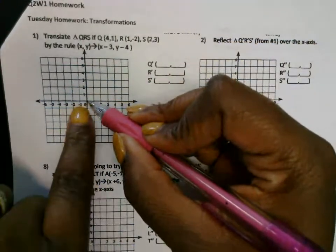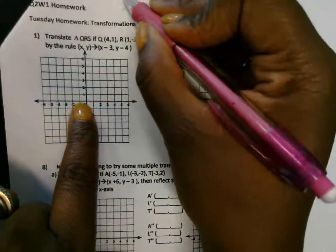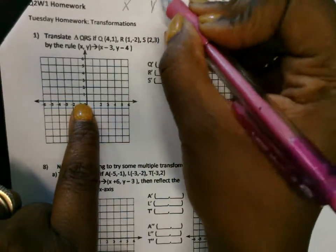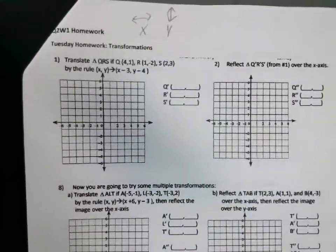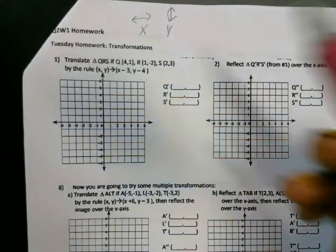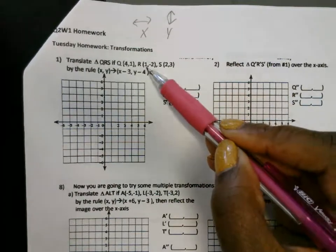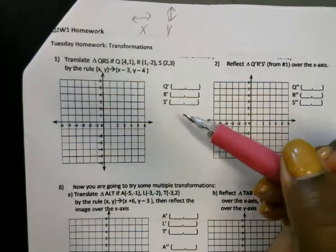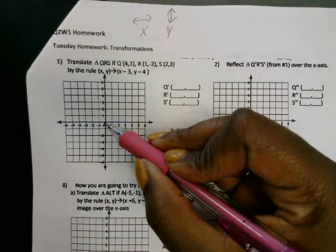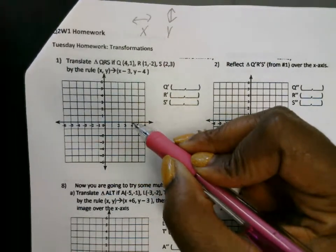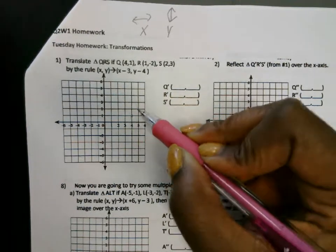Start at the origin. We're going to graph Q, which is at four and one. Remember, the first number is X, which means you go left or right first. The second number is your Y-coordinate, which means you go up or down second. So this is left-right, up-down. So positive four is to the right four. Start at the origin, go to the right one, two, three, four. Positive one is up one. This is where you put your ordered pair for Q.